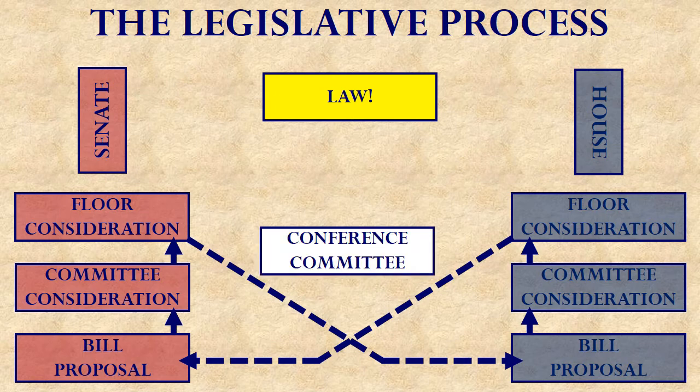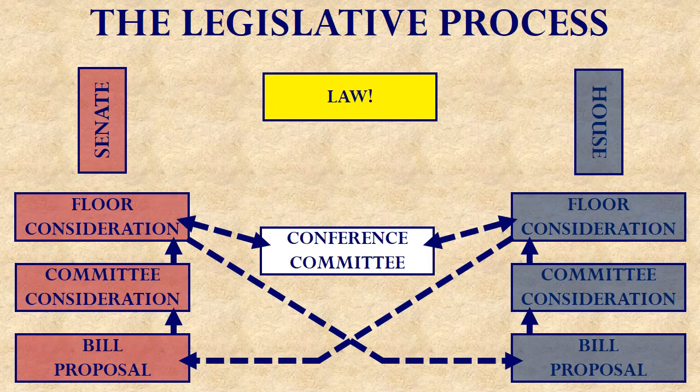As a bill works its way through both of these chambers, inevitably it ends up slightly different. And so that necessitates a conference committee with a few people from each chamber to try to work out a compromise version. That conference committee takes the two incompatible versions from the House and the Senate, works out a compromise version, and then sends it back to both the House and the Senate to be voted on.